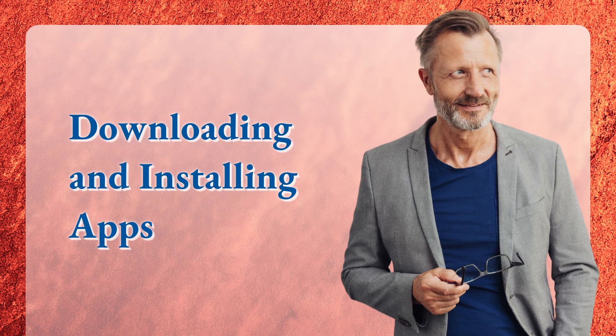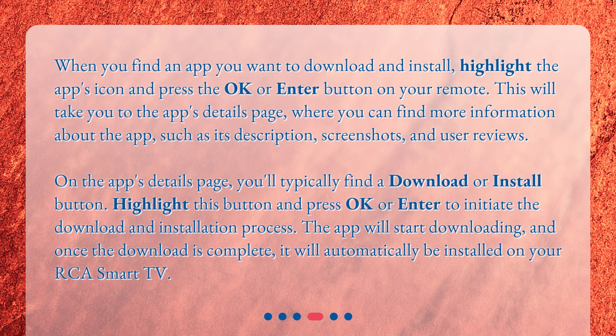Downloading and installing apps. When you find an app you want to download and install, highlight the app's icon and press the OK or Enter button on your remote. This will take you to the app's details page, where you can find more information about the app, such as its description, screenshots, and user reviews. On the app's details page, you'll typically find a download or install button. Highlight this button and press OK or Enter to initiate the download and installation process. The app will start downloading, and once the download is complete, it will automatically be installed on your RCA Smart TV.